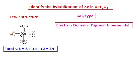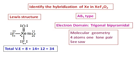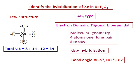The electron domain geometry will be trigonal bipyramidal. Because of the presence of one lone pair, the molecular geometry will be seesaw. It will have dsp3 hybridization, with bond angles as shown, and the molecule will be polar.